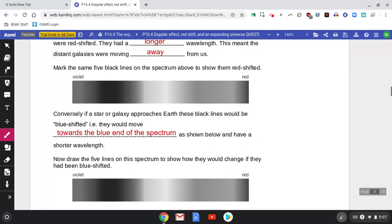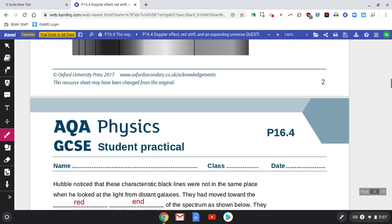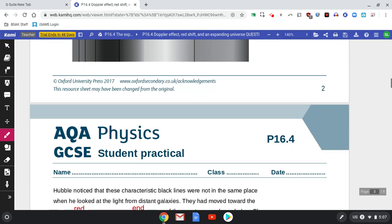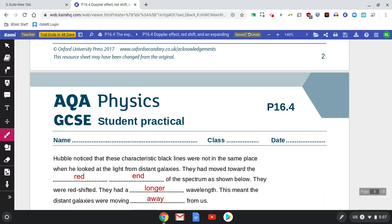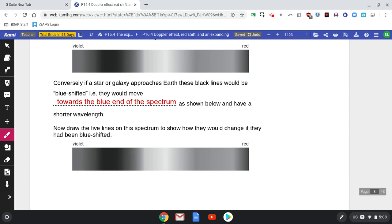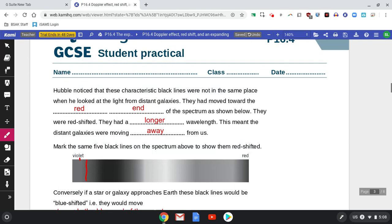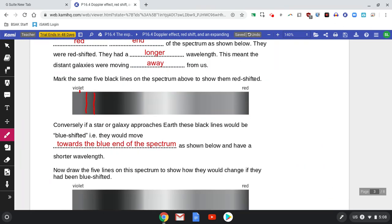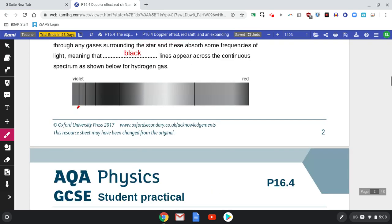It asks us here to mark the same five black lines on the spectrum to show them red shifted. I'll draw them in red because that's easier to see. We'll have the first line which is this one here. Now that was here, but that will be shifted towards the red end of the spectrum. And then we've got the same lines shifted.